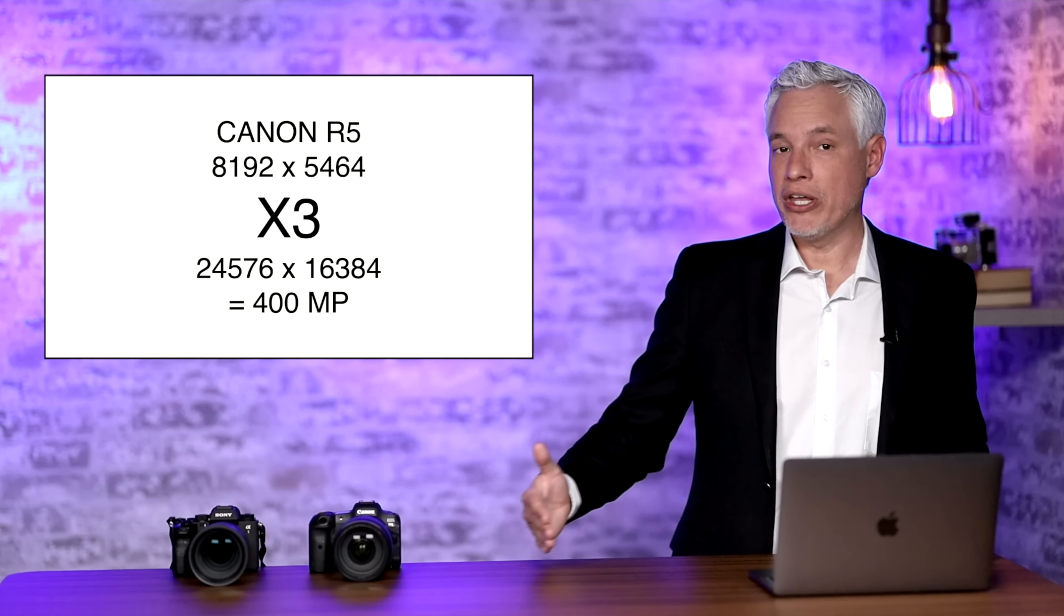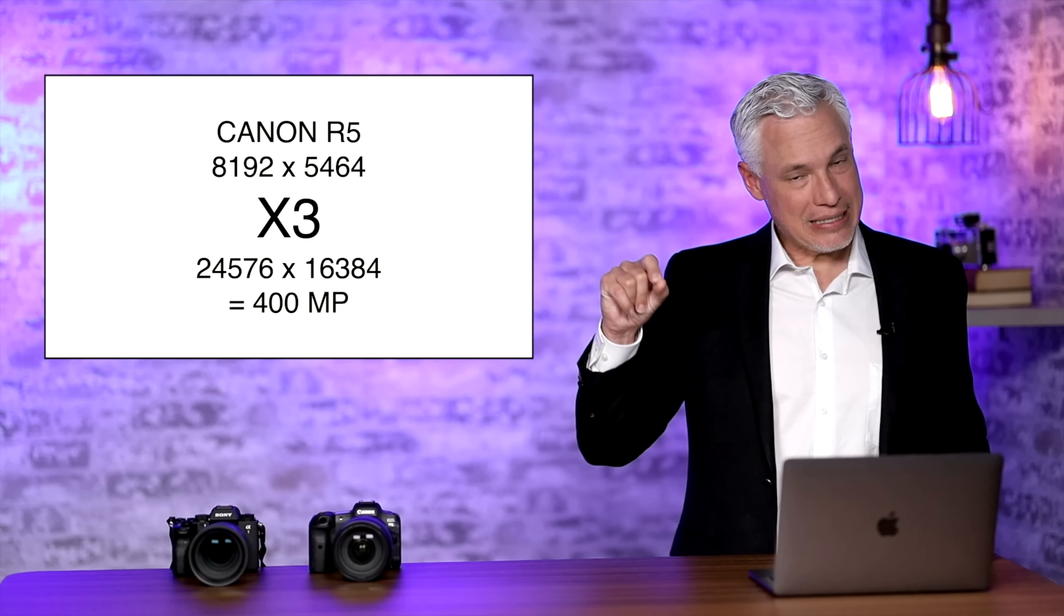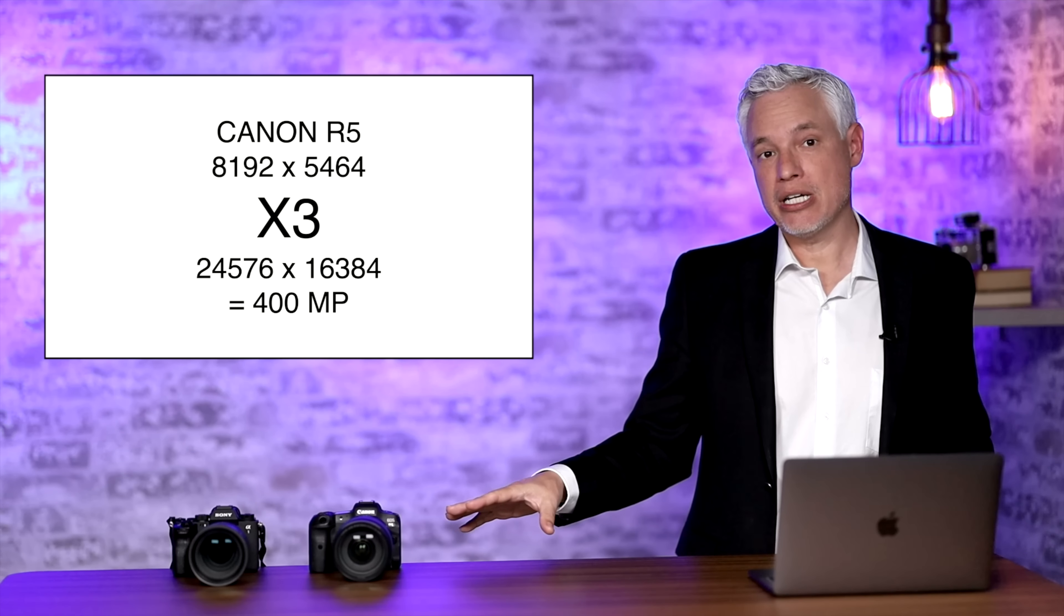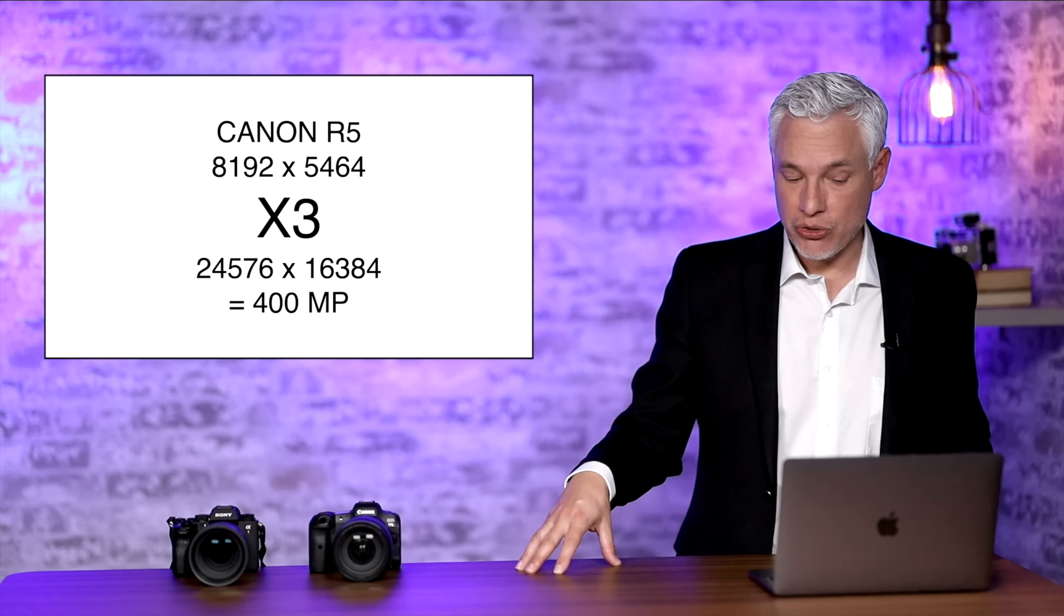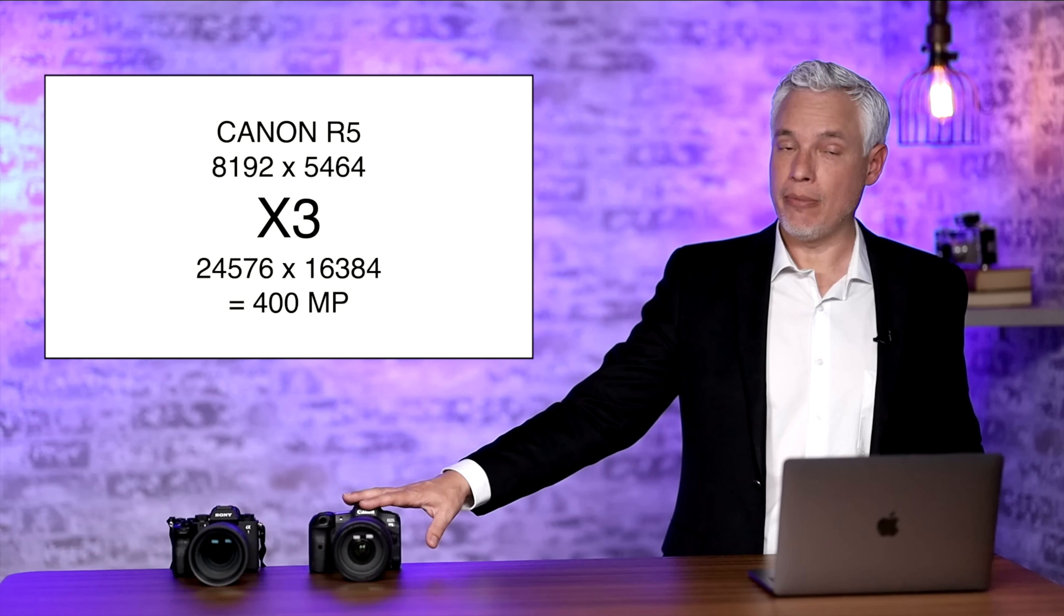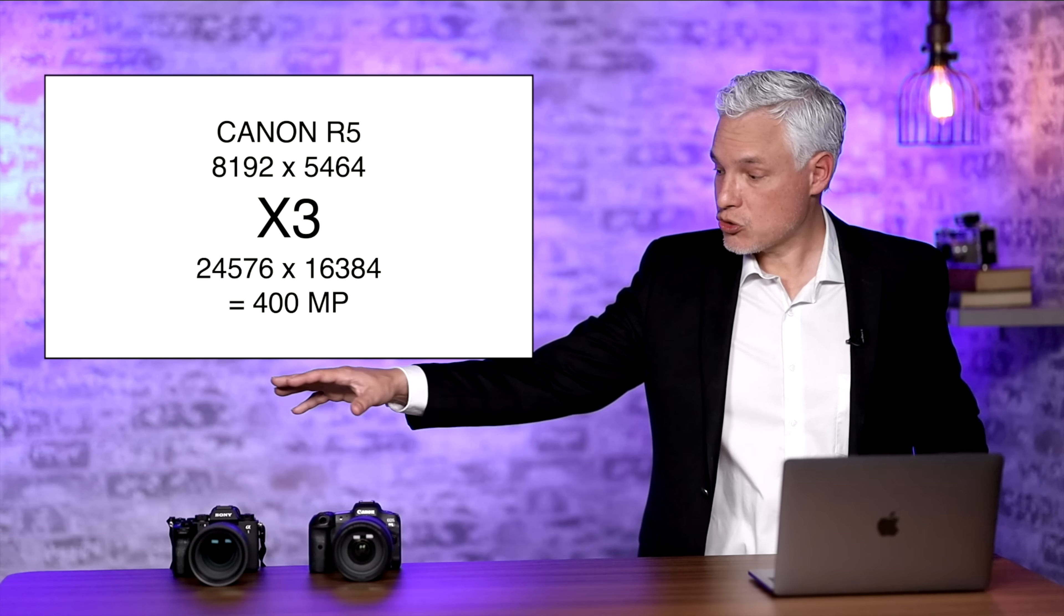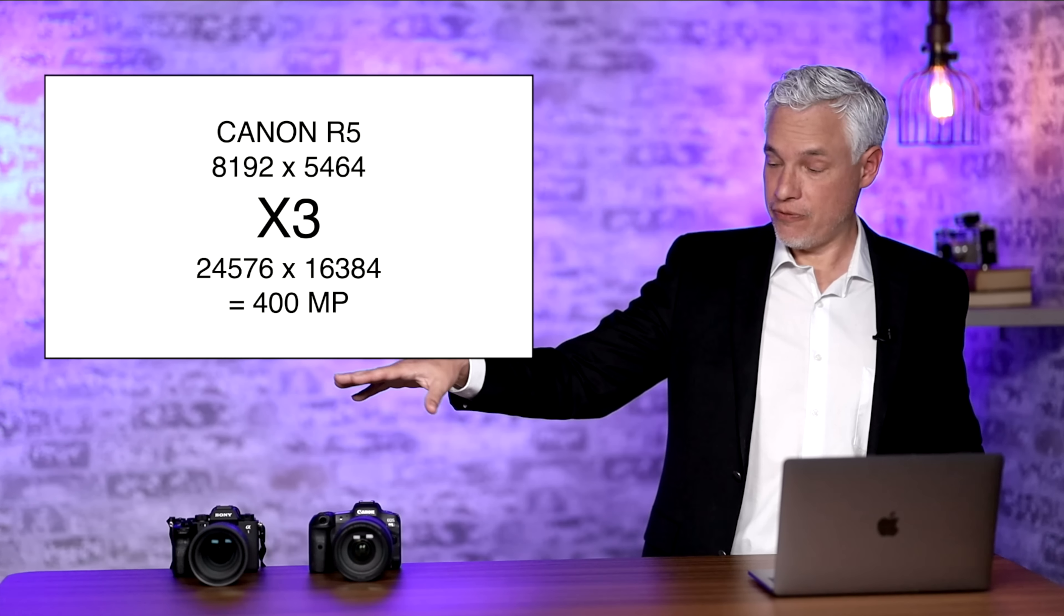It triples the width and height of the image and three squared is nine. So the output resolution is about nine times the original resolution. So our 45 megapixel RAW files become 400 megapixel files or about twice the resolution of the Sony camera.